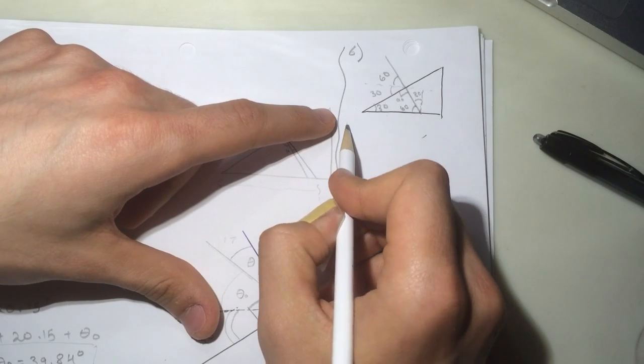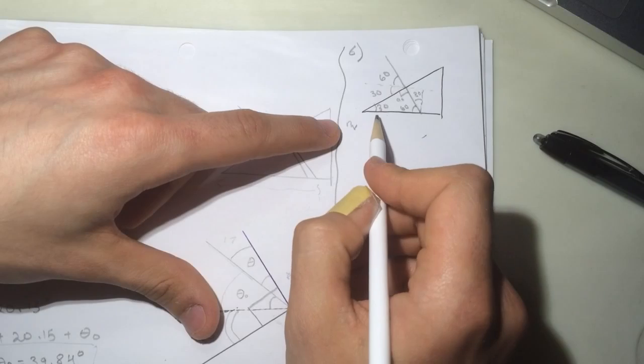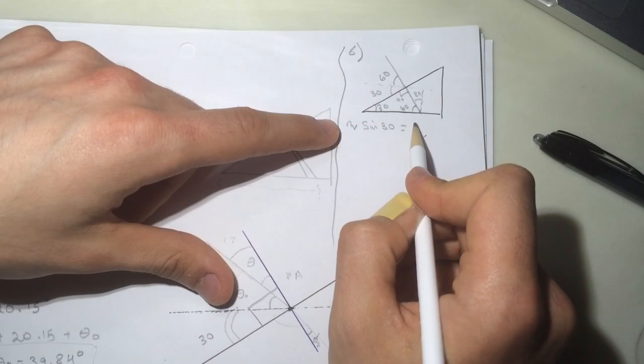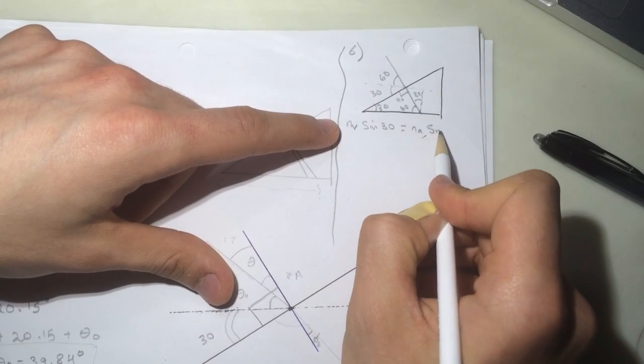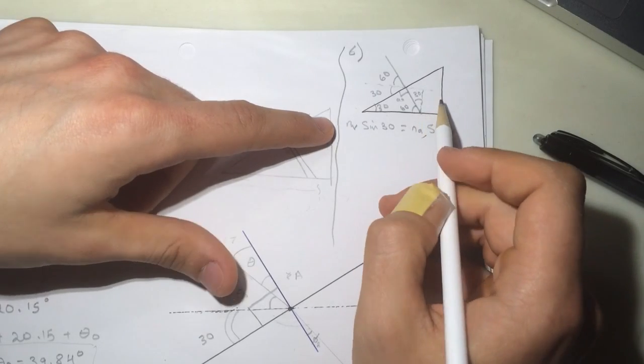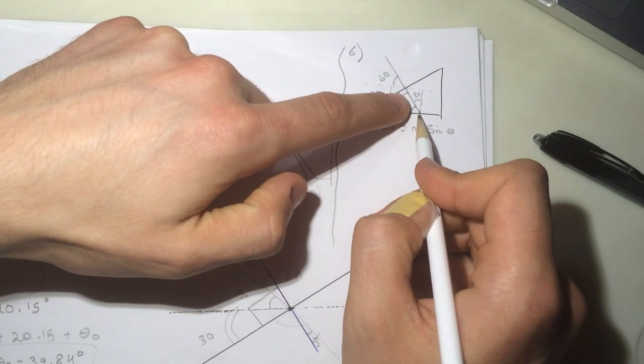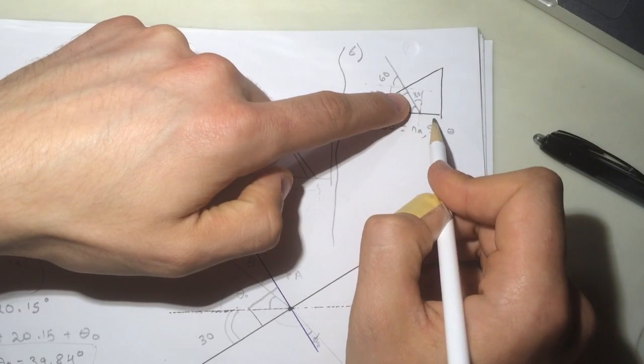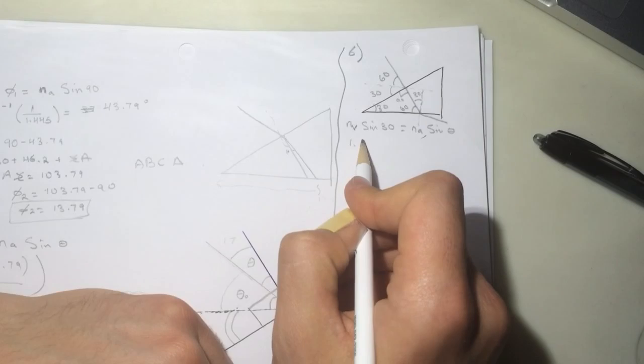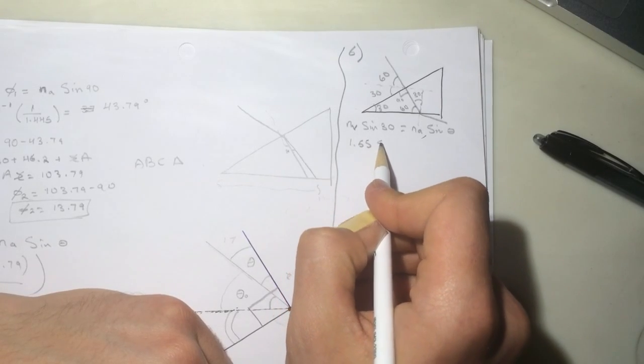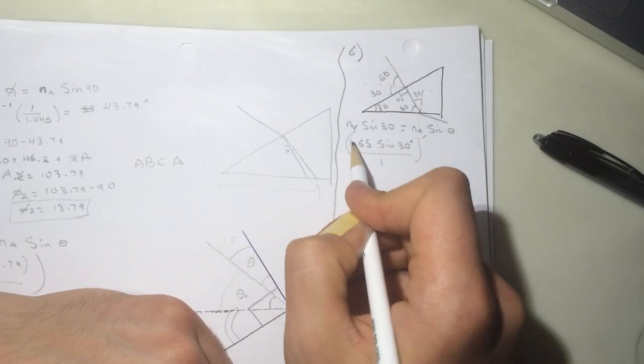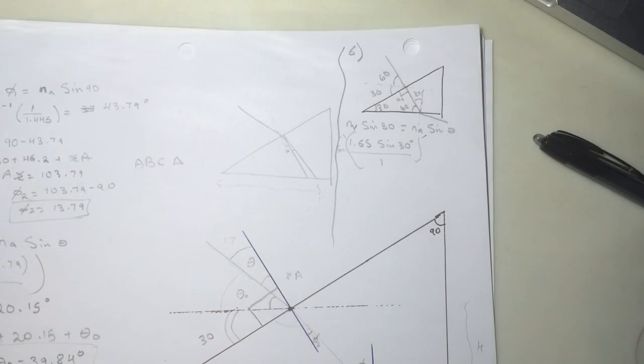It's easy now. The n for the violet times the sine of 30 degrees will be equal to n for the air times the sine of whatever angle we want to find. Because it's going from a large n to less n, it's going to go like this, some kind of like this. So n violet was 1.55 times the sine of 30 degrees divided by 1, and take the sine inverse for this guy. Let's do this real quick.